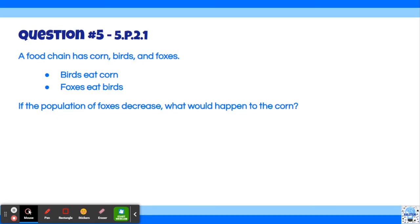Okay, question number five. A food chain has corn, birds, and foxes. If the birds eat the corn and the foxes eat the birds, what would happen to the corn if the population of foxes decrease?